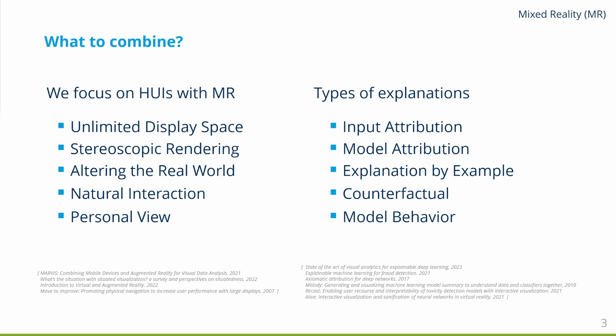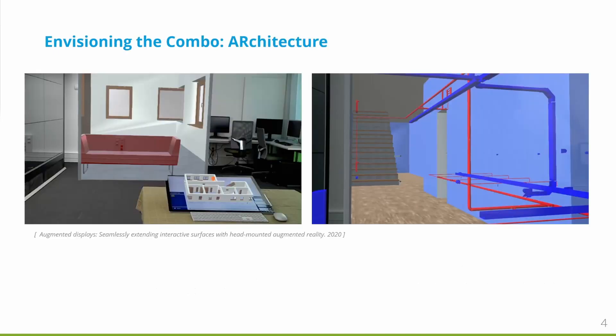In order to combine these, one could think of a design space that matches the strengths of mixed reality devices to the different XAI types. We explain all of these strengths and explanation types in detail in the paper, but only describe one scenario in the following. Imagine an architect working on a building using an interactive surface with a building model and a head-mounted display that overlays the planned changes onto the real world. Now, consider an AI system that warns about a design flaw that could damage the integrity of the building. Using input attribution, the system could highlight which parts of the current structure are responsible for this warning.